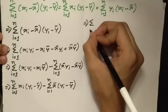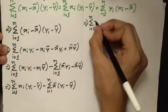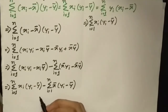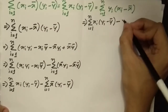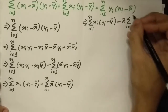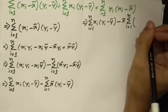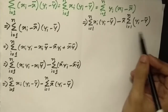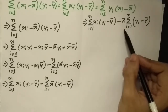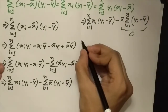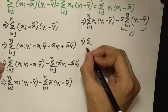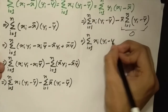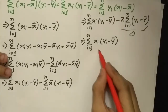We take x̄ out of the summation operator, giving x̄·Σ(yᵢ - ȳ). Since Σ(xᵢ - x̄) = 0, by the same logic Σ(yᵢ - ȳ) = 0, so this whole term is zero. We are left with Σxᵢ(yᵢ - ȳ), which proves the first form of the third equation.